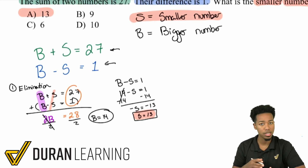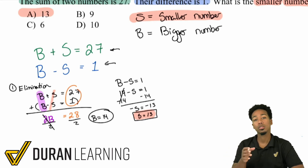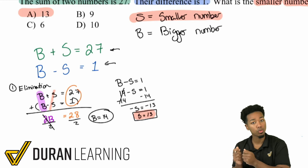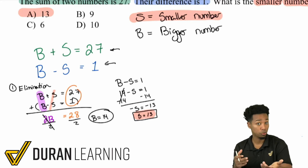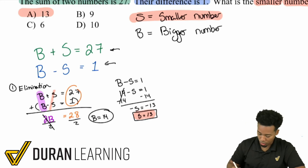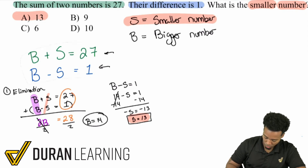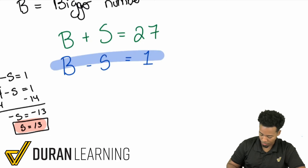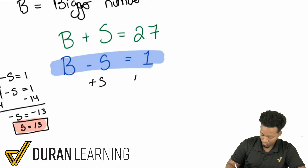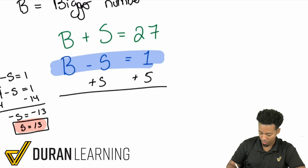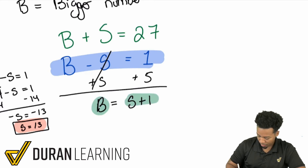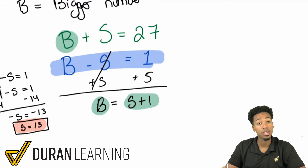Now let me show you how to do it with substitution — much faster. When you know which specific variable you need, use a strategy that gives you that one immediately. Take the equation B minus S equals 1 and add S to both sides, giving B equals S plus 1. Now substitute that into S plus B equals 27: S plus (S plus 1) equals 27.